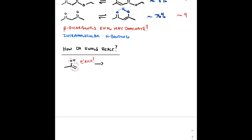If you imagine the lone pair on the oxygen coming down to create the carbon-oxygen double bond, we kick off that pair of electrons, and the nucleophilic carbon attacks the electrophile E+. This gives an oxonium intermediate, and upon loss of that proton, we get a new carbonyl compound — a new ketone — with the hydrogen substituted by a new electrophile.